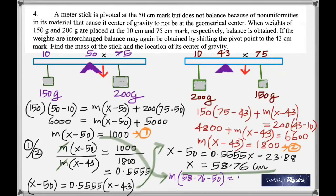And then substitute the value of x into equation one. We got x as 58.76. So substitute that and you get the mass of the meter stick as 114.2 gram.